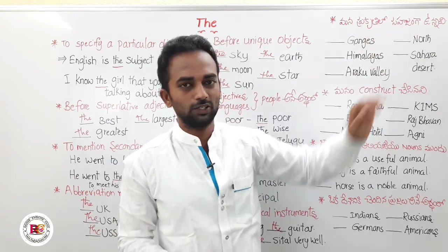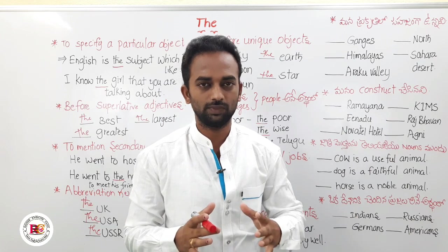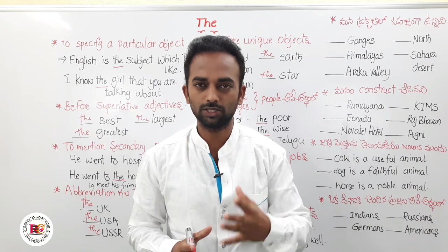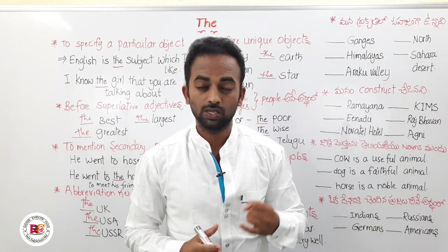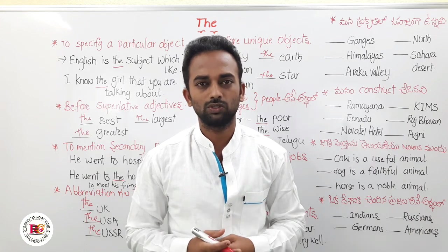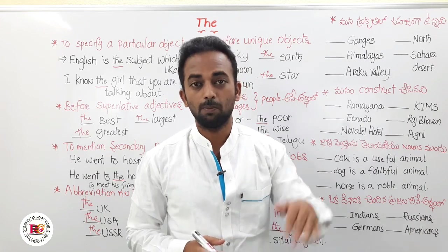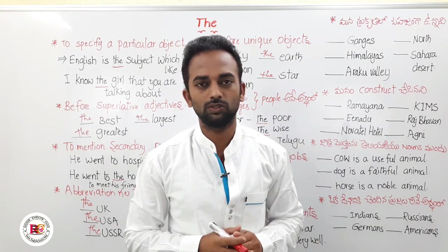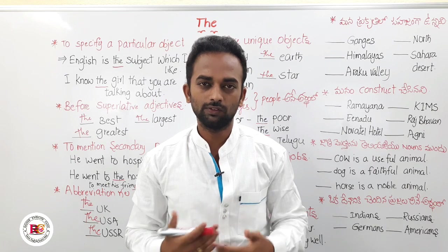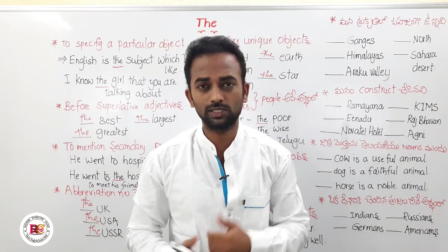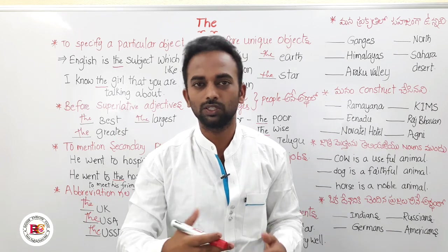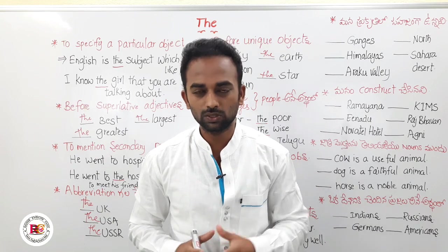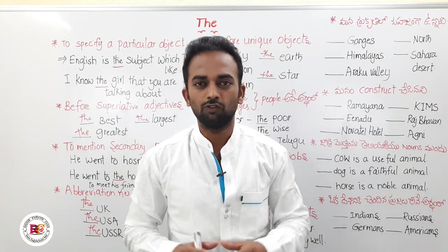The next point covers geographical features in nature. We use 'the' before rivers, oceans, seas, waterfalls, mountains, plateaus, plains, valleys, poles, directions, gulfs, deltas, volcanoes, forests, and deserts. All of these geographical features take 'the' before them.